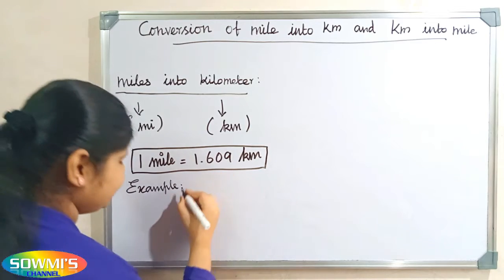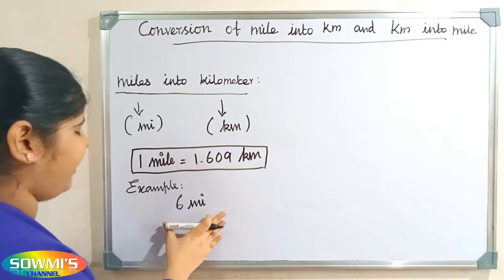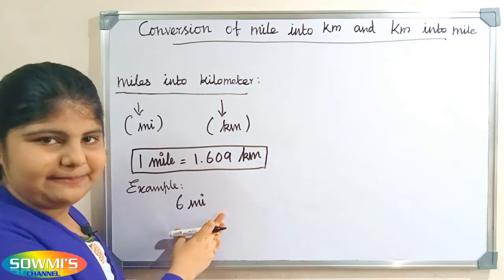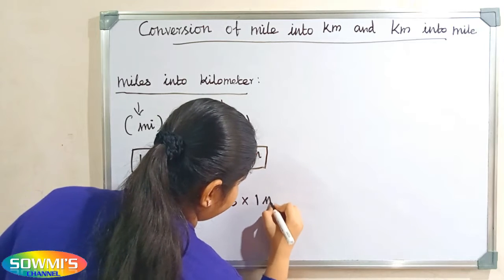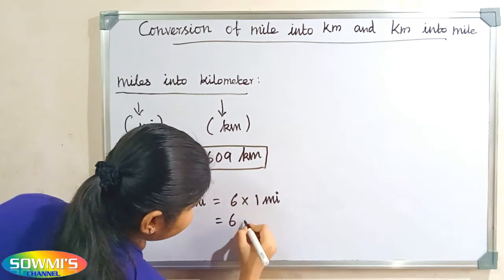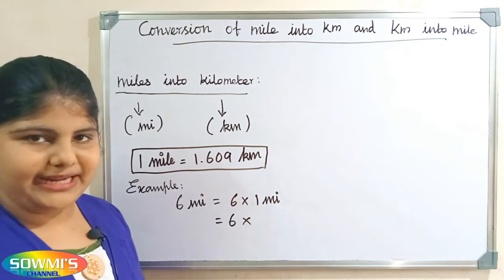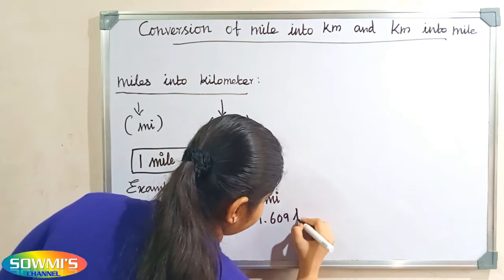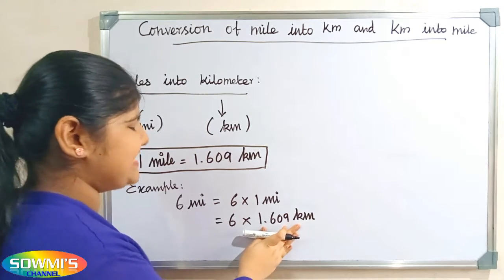For example, we can take 6 miles. We have to find how many kilometers are in 6 miles. 6 miles can be written as 6 multiplied by 1 mile. Now we will apply the formula — we substitute 1.609 kilometers in the place of 1 mile, so it becomes 6 multiplied by 1.609 kilometers.